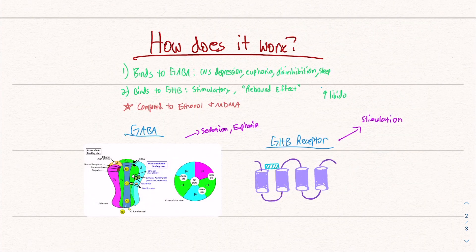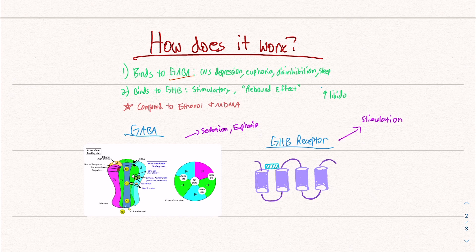How does GHB work? In a nutshell, it binds to GABA. We've talked about GABA. Long story short, this leads to central nervous system depression, euphoria, disinhibition, and sleep.